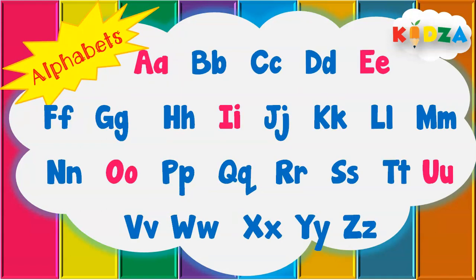Let's read the alphabet one time with the alphabet song: A B C D E F G H I J K L M N O P Q R S T U V W X Y and Z. Now I know my ABCs, next time won't you sing with me. There are 26 letters in the alphabet — you all know that.